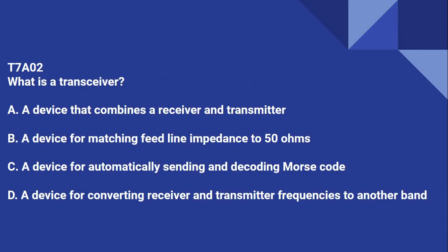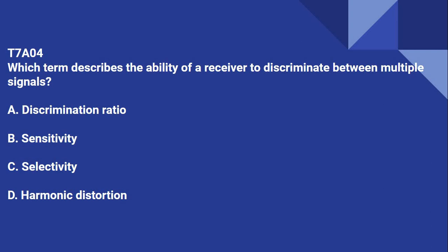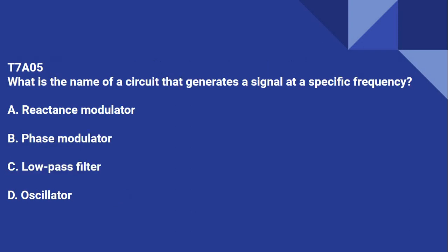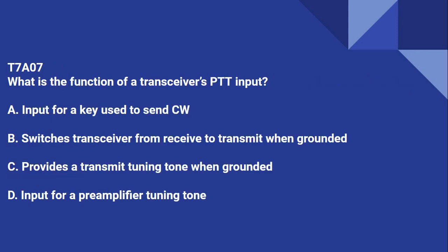T7A02: What is a transceiver? A transceiver is a device that combines a receiver and a transmitter. T7A03: Which of the following is used to convert a signal from one frequency to another? It's a mixer. T7A04: Which term describes the ability of a receiver to discriminate between multiple signals? Selectivity. T7A05: What is the name of a circuit that generates a signal at a specific frequency? Oscillator. T7A06: What device converts the RF input and output of a transceiver to another band? That's a transverter. T7A07: What is the function of a transceiver's PTT input? It switches the transceiver from receive to transmit when grounded.